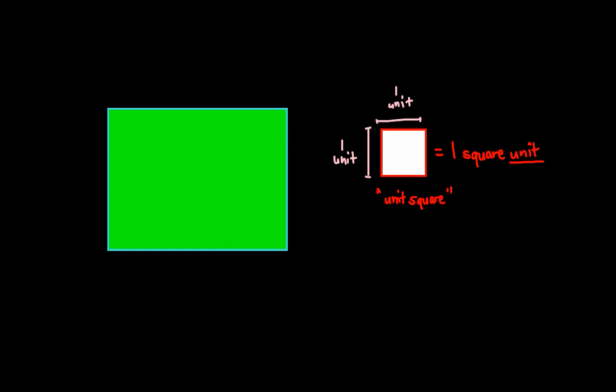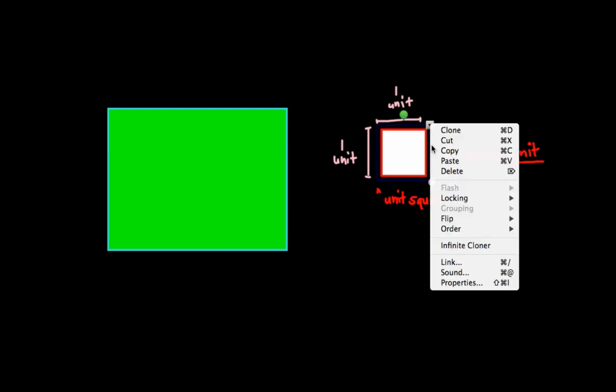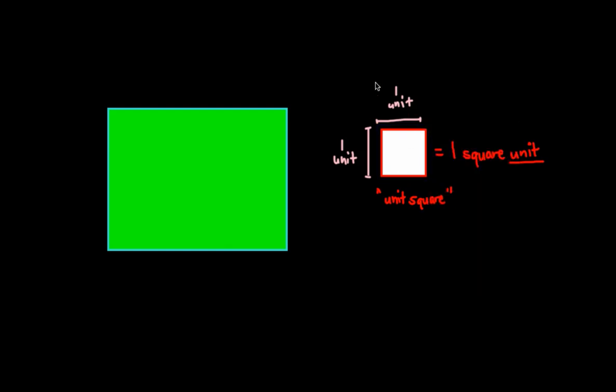So, let me just switch gears here and make this an infinite cloner. There we go. We're all set now. Okay. So, if I can take these unit squares, I can find the area of this shape, this plain figure, this rectangle, by laying these unit squares.